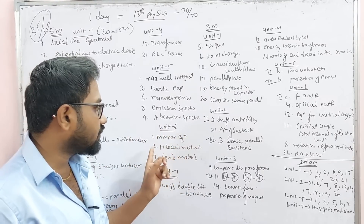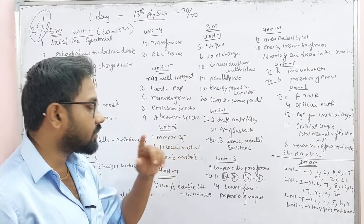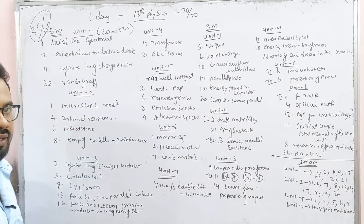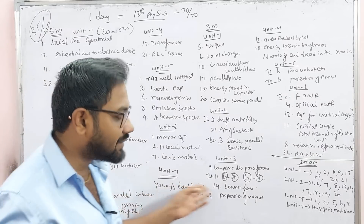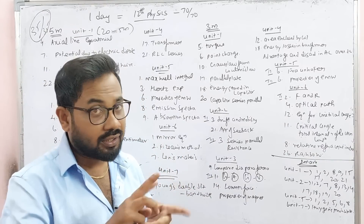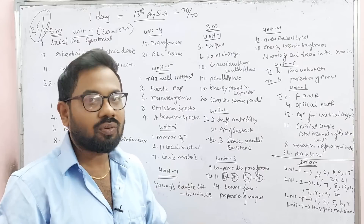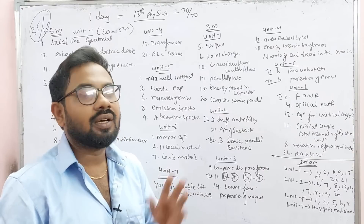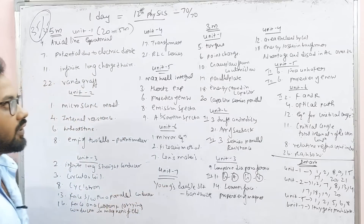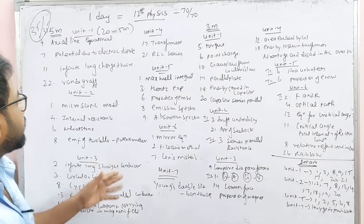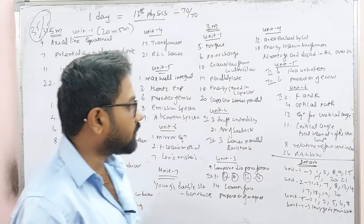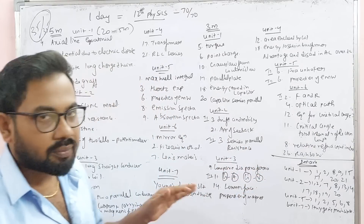Unit 6 is Mirror Equation, Fissure Methods, and Lens Maker's equation. Unit 7 is included. Setup is Bandwidth. Bandwidth is 5 marks — if you have 5 marks, you can get 5 marks. In total, there is a total of 23 marks.